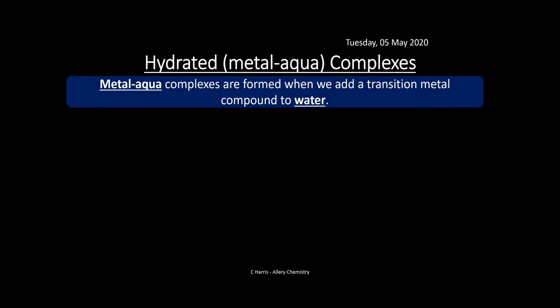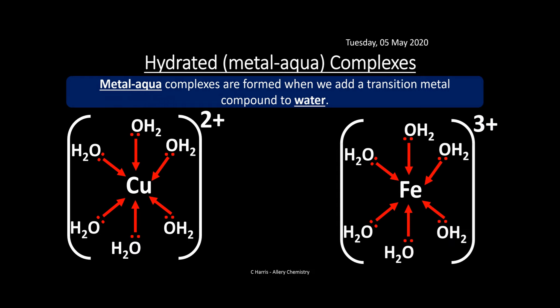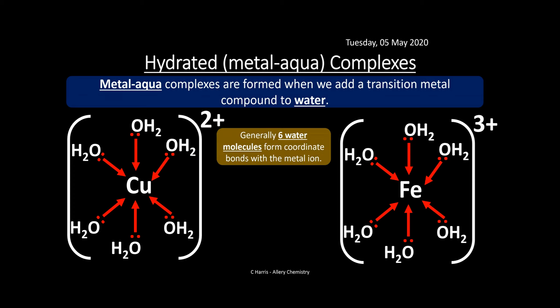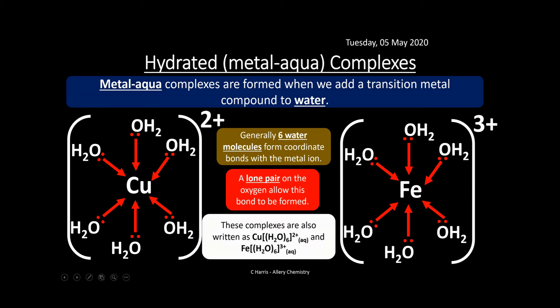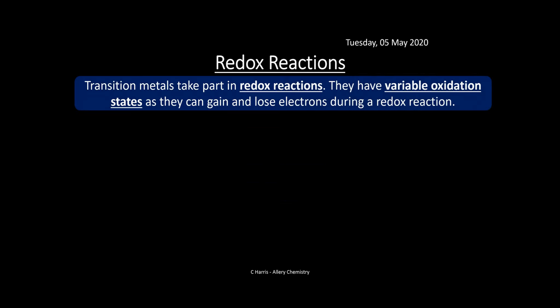Hydrated metal aqua complexes are formed when a transition metal compound is added to water. Generally, six water molecules form coordinate bonds with the metal ion via a lone pair on the oxygen. This happens when any transition metal is dissolved in water, forming hexa-aqua complexes. Examples include [Cu(H₂O)₆]²⁺ and [Fe(H₂O)₆]³⁺.